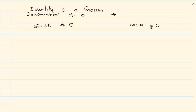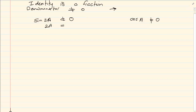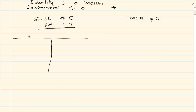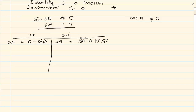Now if sin2a equals zero, you must know your general solution. You press shift-sin of zero and you get 2a equals zero. Remember you don't split it there — you use your reference angle t. Since t is positive, sin is positive in the first and second quadrants. For the first quadrant: 2a = 0 + k·360°. For the second quadrant: 2a = 180° − 0 + k·360°. If you are not aware of what I am doing, go to your general solution and revise it.